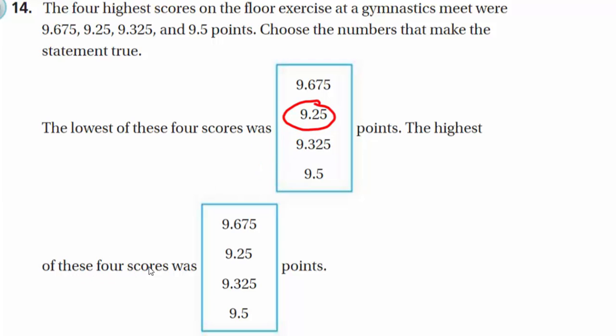Now, it says the highest of these four scores was, well, again, we still have all those 9s, but here, look, we have a 6 in the tenths place, and there isn't any other numbers that have a 6 in the tenths place. Therefore, that's the highest, and that's how we compare decimals. My friends.